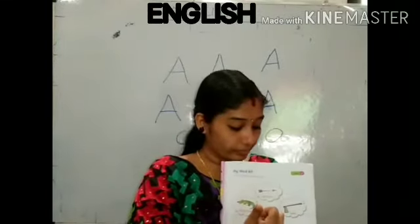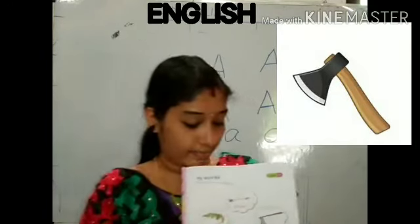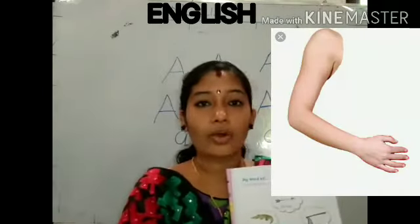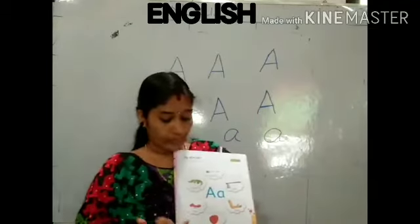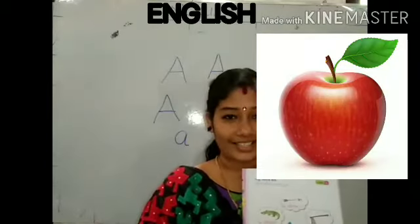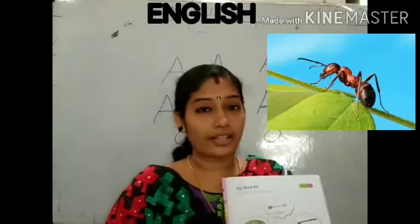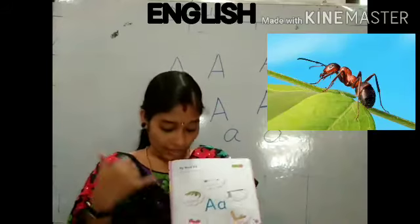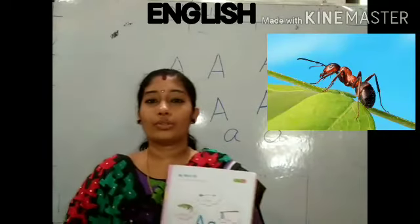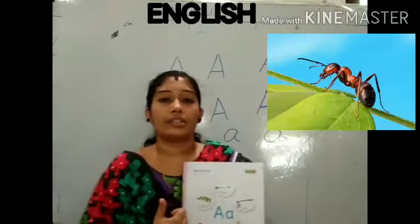The next word is A. Next: arm. What does arm mean? Do you have arms? Arm. Then say the name — your favorite: apple. A — apple. Next: have you ever seen these insects? We can see them in our home. We can see these insects in our sugar bottle. This is ant. Ant.